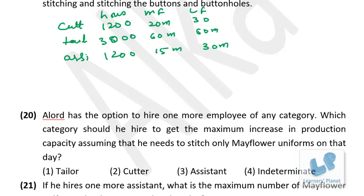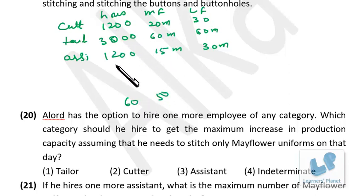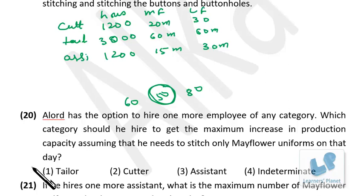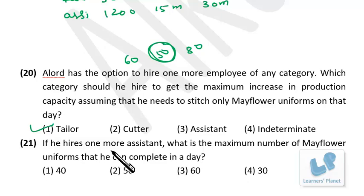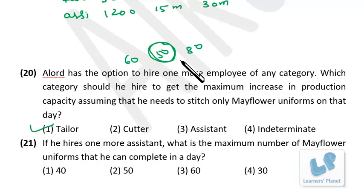Question 4: If one more employee can be hired, which category gives maximum increase in Mayflower production? For Mayflower only — cutting: 1200 ÷ 20 = 60; tailoring: 3000 ÷ 60 = 50; buttons: 1200 ÷ 15 = 80. Tailors are the bottleneck at 50, so hiring one more tailor increases capacity. Question 5: With one more assistant, maximum Mayflower uniforms is still 50 — still limited by tailors, not assistants.